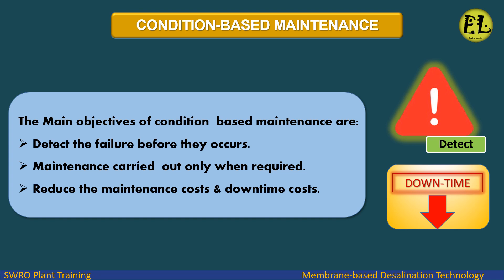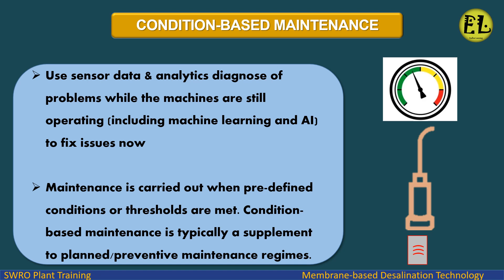The main objectives of condition-based maintenance are: detect failures before they occur, maintenance carried out only when required, and reduce maintenance costs and downtime costs. It uses sensor data analytics and diagnosis of problems while machines are still operating, including machine learning and AI, to fix issues — maintenance is carried out when predefined conditions or thresholds are met.